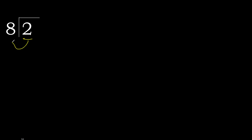2 divided by 8. 2 is less, therefore next — that is not a number, therefore complete. Always complete with 0. Here: 0 point 0.